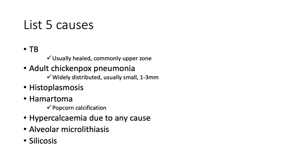Five causes of pulmonary calcifications: TB (usually healed TB, commonly in the upper zones, as TB favours areas of good ventilation but poor perfusion, which favours AFB deposition); adult chickenpox pneumonia (wide distribution, usually 1-3 mm); histoplasmosis; hamartoma (popcorn calcification); and hypercalcaemia due to any cause (granulomatous disease, renal failure, immobility, malignancy, familial hypocalciuric hypercalcaemia, various endocrine causes and drugs). Also consider alveolar microlithiasis and silicosis.